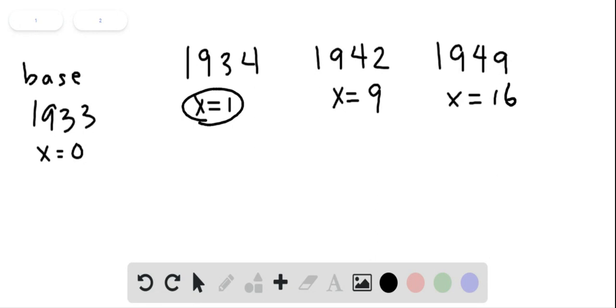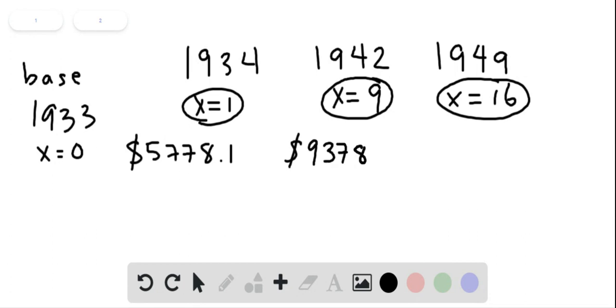With the nasty function, we can use our graphing calculators to plug these values in. When we plug in X equals one, we get $5,778.1. When we plug in X equals nine, we get $9,378.2. When we plug in X equals 16, we get $4,402.1.